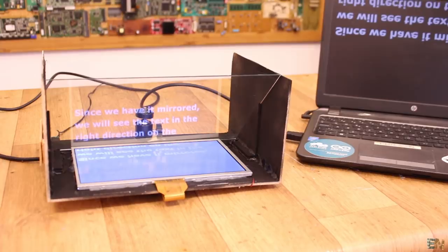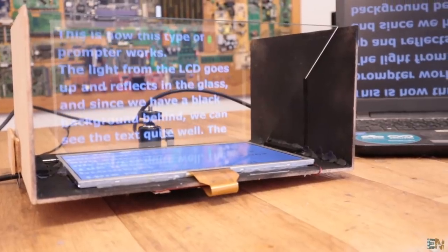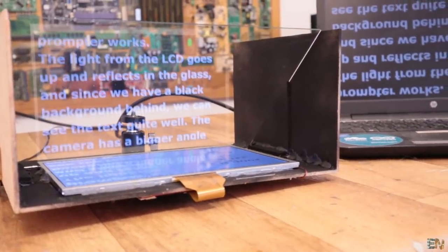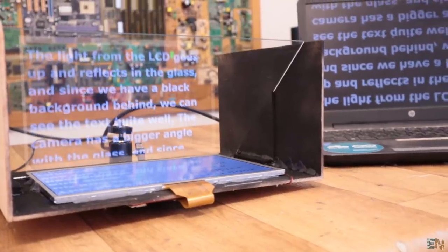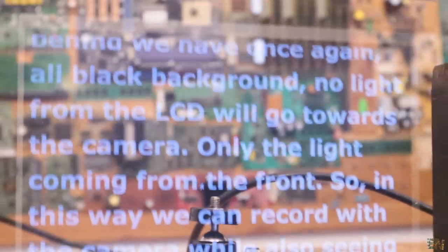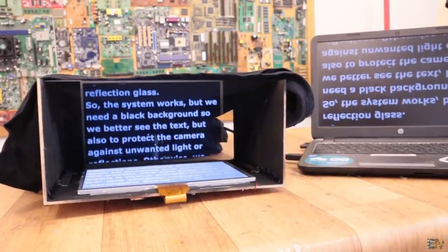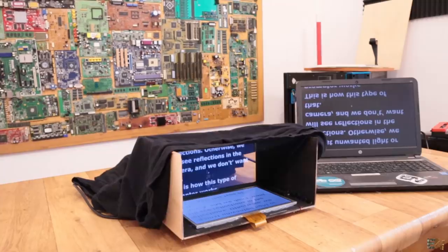Because we have it with mirror settings, we will see the text in the correct direction on the reflection glass. Ok, so the system works. But we need a dark background so we better see the text. But also to protect the camera from unwanted light or reflections. Otherwise, we will see the reflections in the camera and we don't want that.